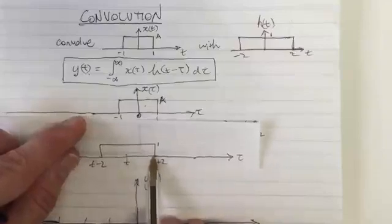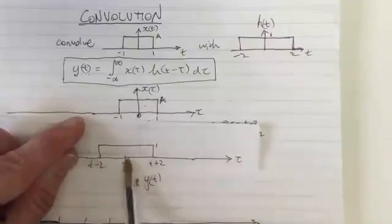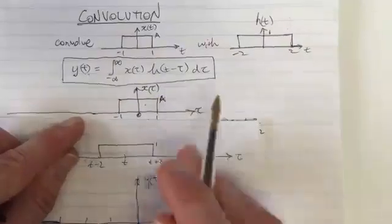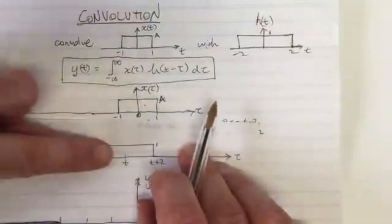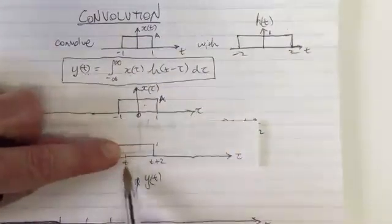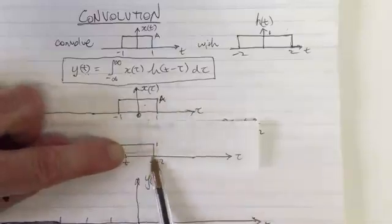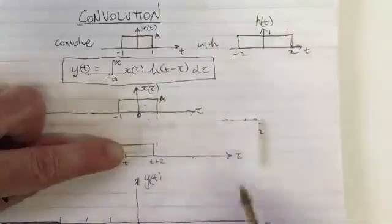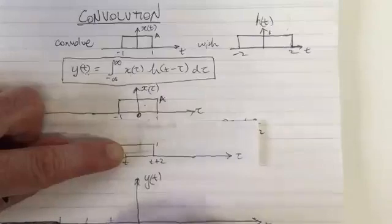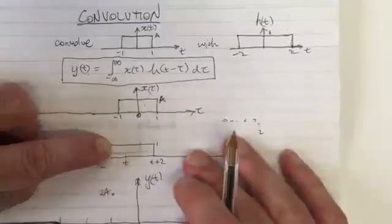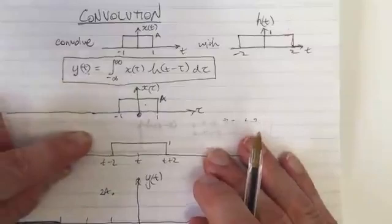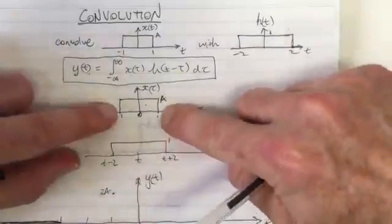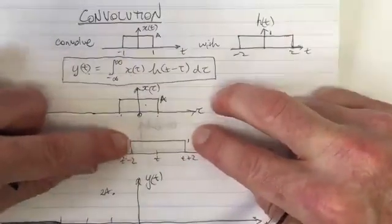When t equals minus 1, we get full overlap of the top function, since the top function spans minus 1 to 1 (width 2) and the bottom spans 2 units. The product has height a times 1, and the width is 2, so the area equals 2 times a. So when t equals minus 1, y(t) equals 2a. For all values of t increasing from minus 1, we still have full overlap of the top function — these edge bits get multiplied by 0 — and the area stays the same all the way up to t equals 1.